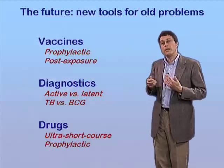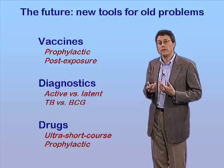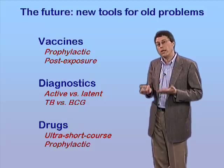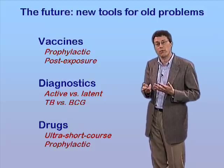To sum up: there are old problems that have persisted throughout the history of TB that continue to be problems today, but I think we now see on the horizon the hope and prospect of developing new tools to attack these old problems. Before I close, I want to identify three areas where there is particularly urgent need for development of new tools and where I think academic scientists have an important role to play in driving discovery efforts.